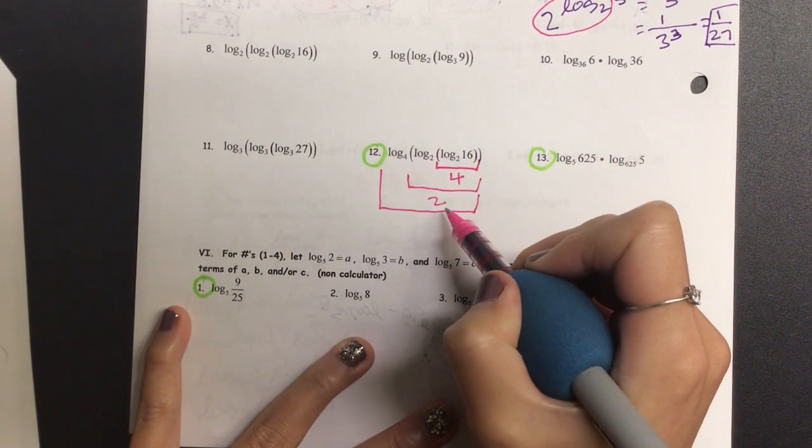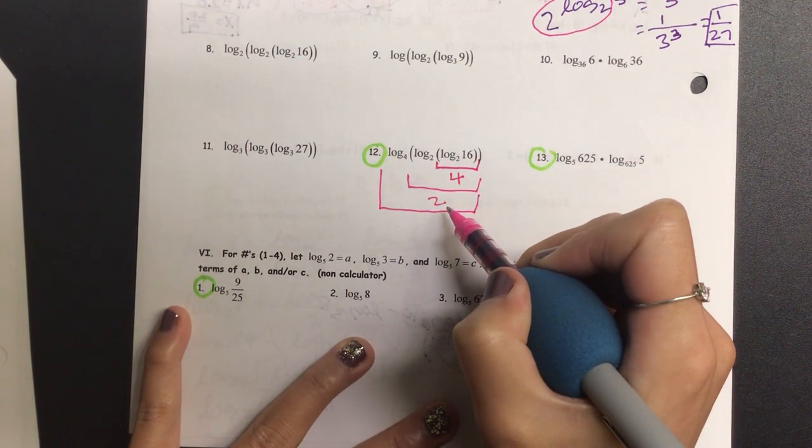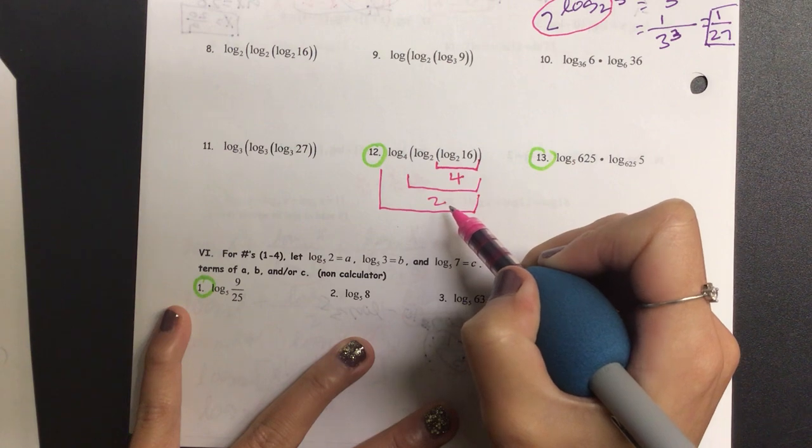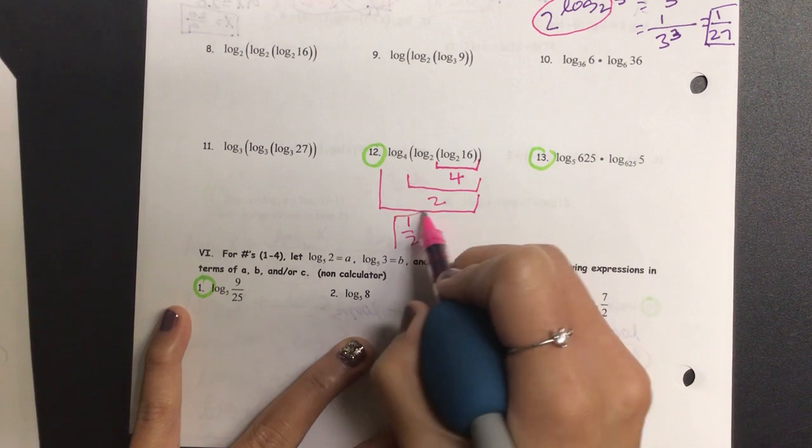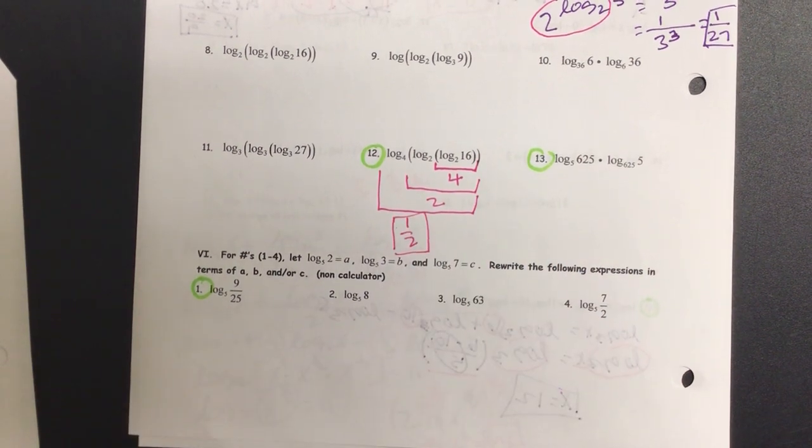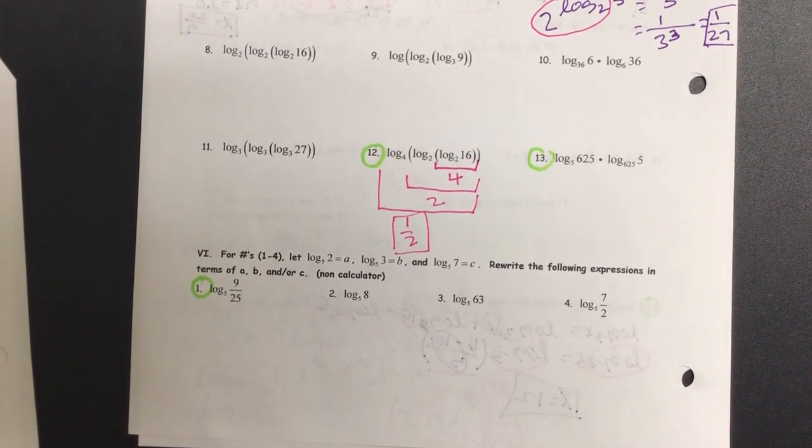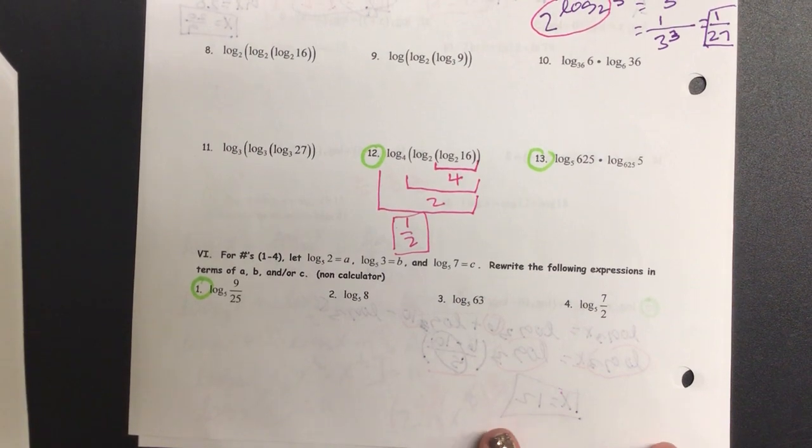And let's go to our last one. 4 to the power of something is 2. What is that? 1 half. Because square root of 4 is 2, so 1 half. And that is our final answer. Very visually pleasing.